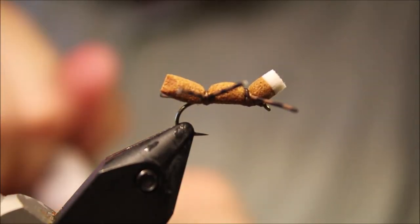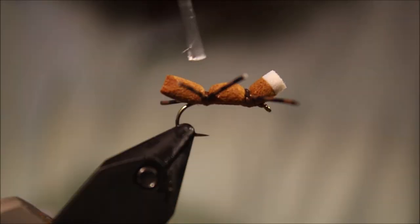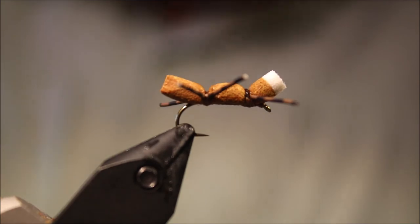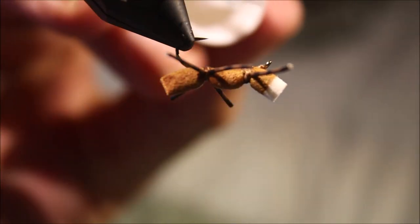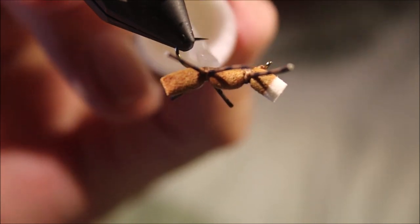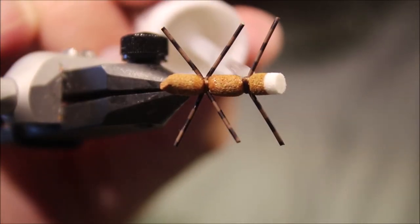If you want, come in with some thin head cement, put a spot at the wraps at the back, spot at the wraps at the front, and just do the whole belly. Probably don't need to do this.